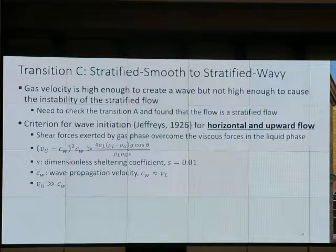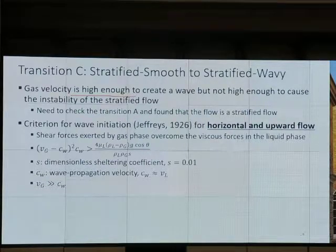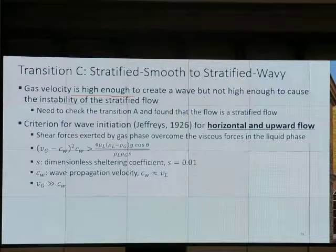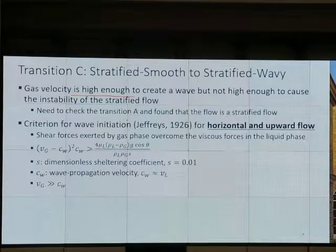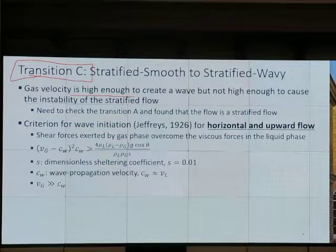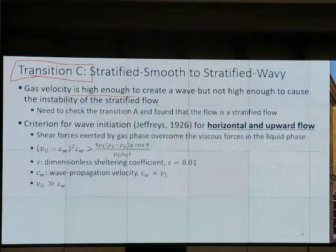Let's continue. Transition C is about when we check transition A and found that it is stratified flow. Now we want to know if it is going to be stratified smooth flow or stratified wavy. If the velocity of gas is high enough - turn on the fan and blow on water - we create waves. If the velocity is high enough, we can have waves, but the velocity may not be high enough to cause instability of the stratified flow. It just makes waves but doesn't make the flow unstable. Before we check transition C, we have to check transition A first. Check A and make sure it is stratified flow, then check if it is stratified wavy or not.